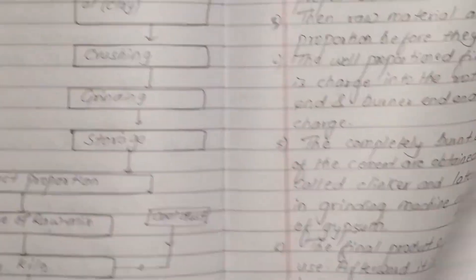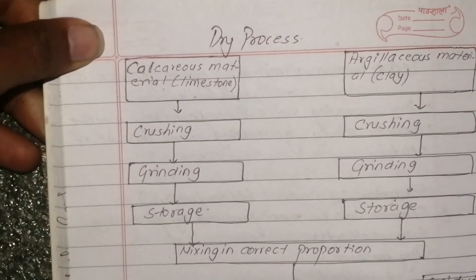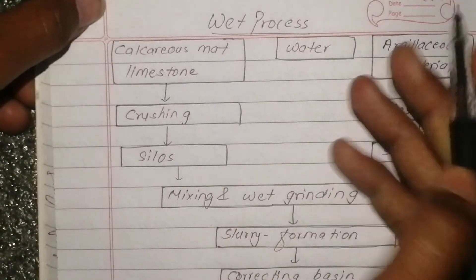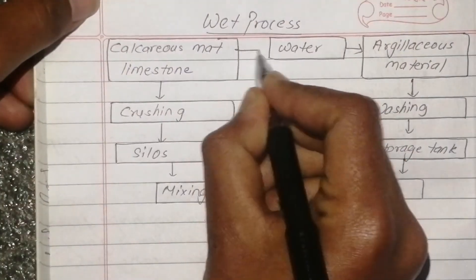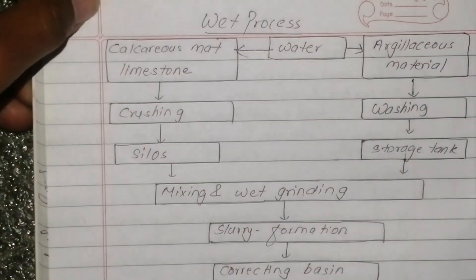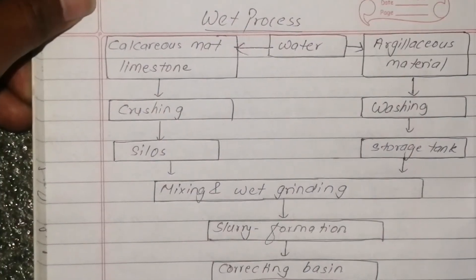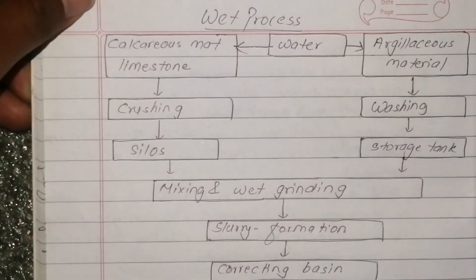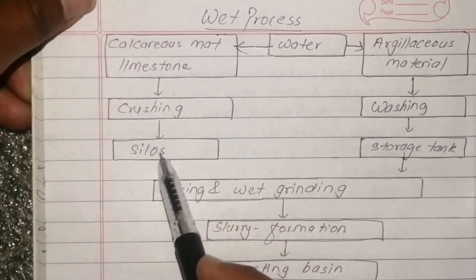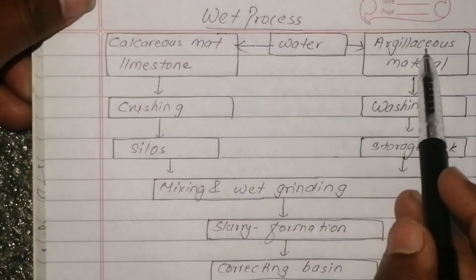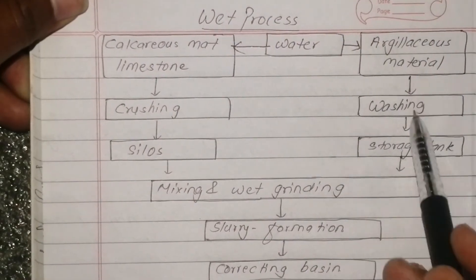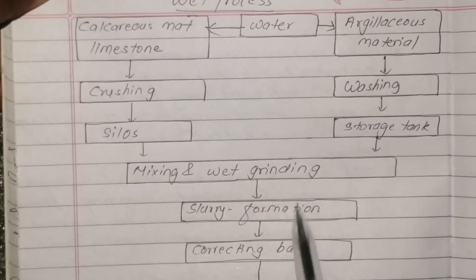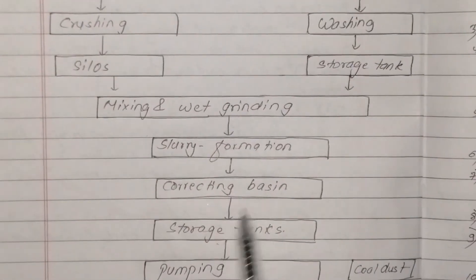In the wet process, water is added during grinding. Wet grinding is performed, followed by slurry reformation and storage in a storage tank, then pumped into the kiln.